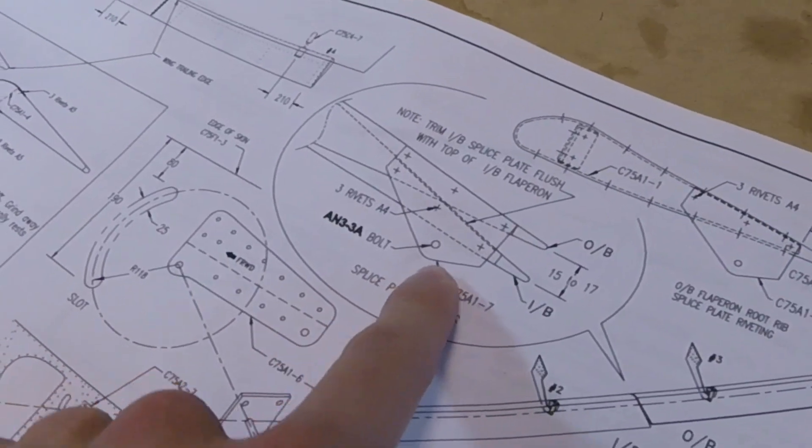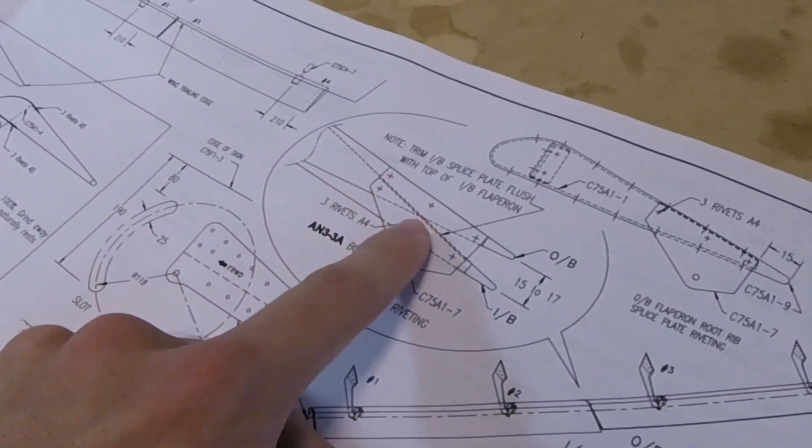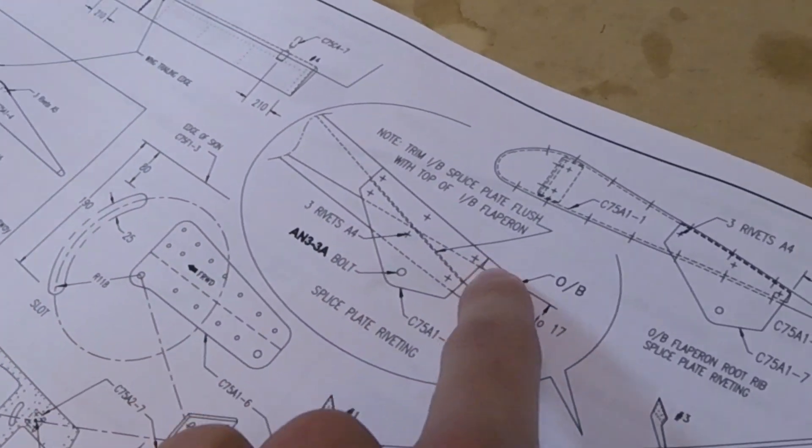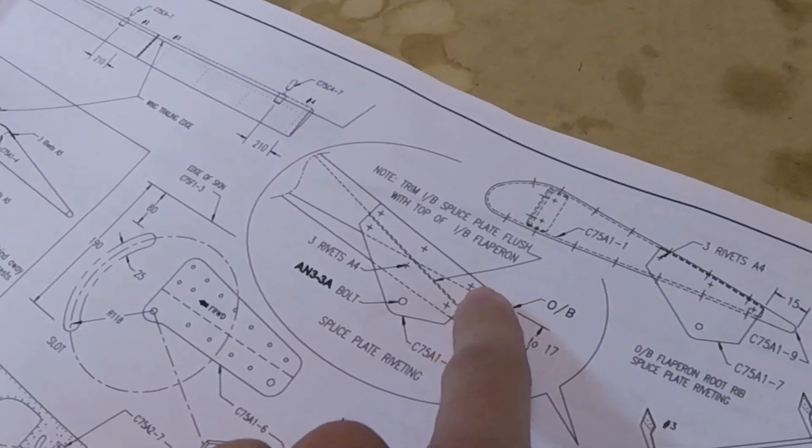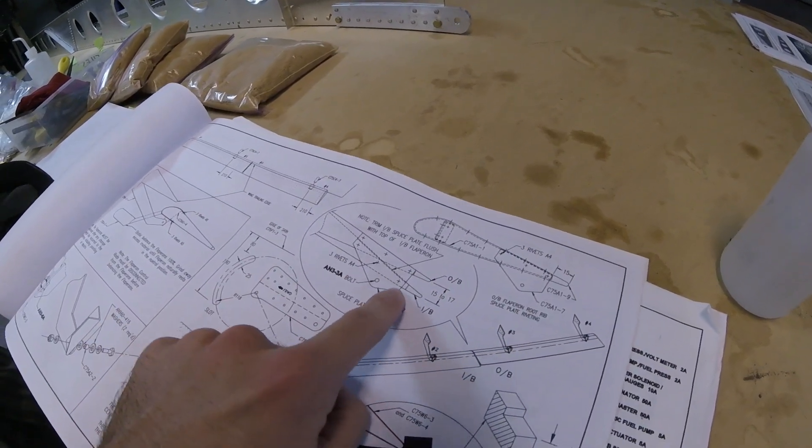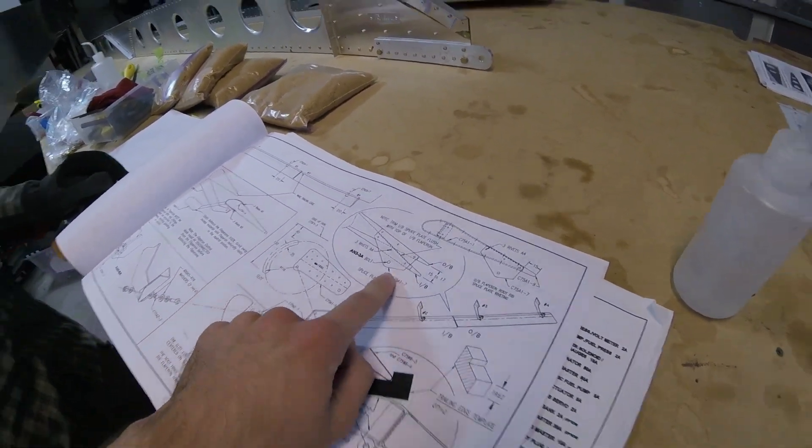So you're saying what you did is you raised this plate up so that you had more metal, right? Yeah, so the edge tolerances weren't as tight. Correct. And so you just did the same thing with the other plate. Correct.